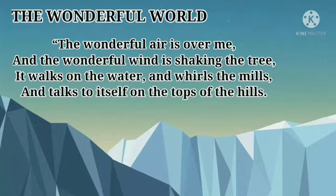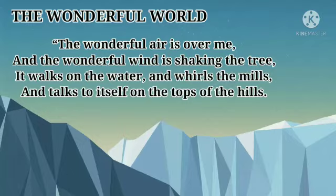Now let's move to the second stanza. The second stanza lines: 'The wonderful air is over me and the wonderful wind is shaking the trees. It walks on the water and wheels the mills and talks to itself on the tops of the hills.' In the second stanza, the poet describes that the wonderful air and wind is shaking the trees.